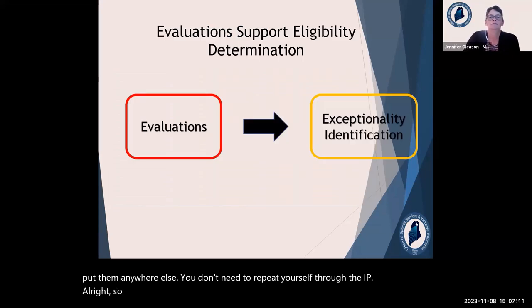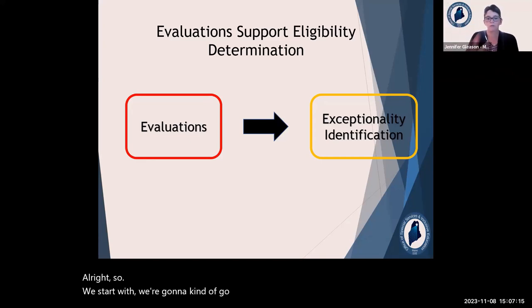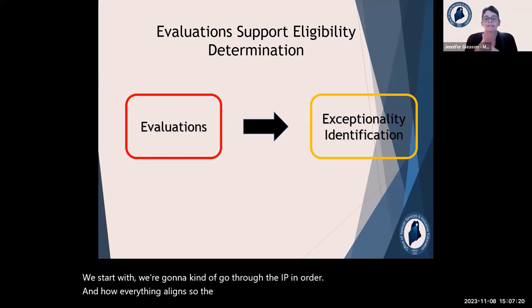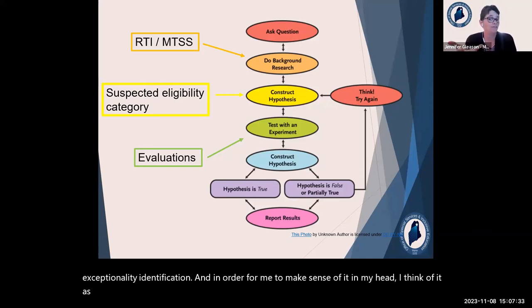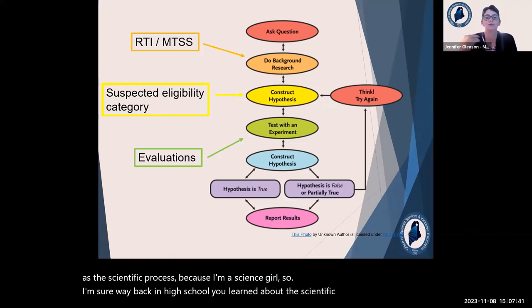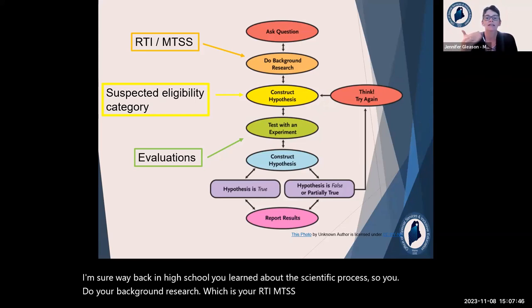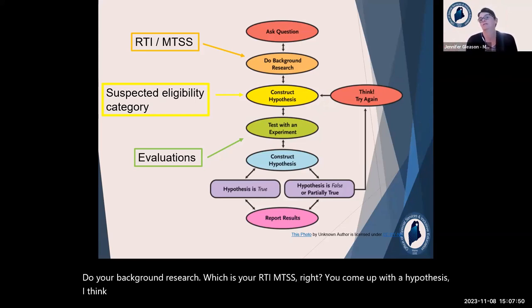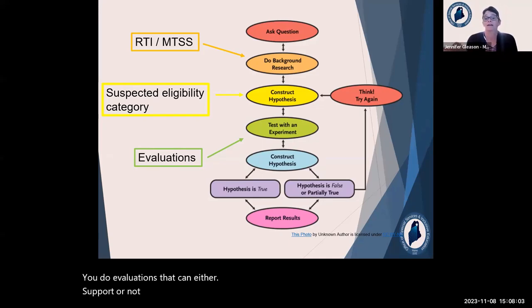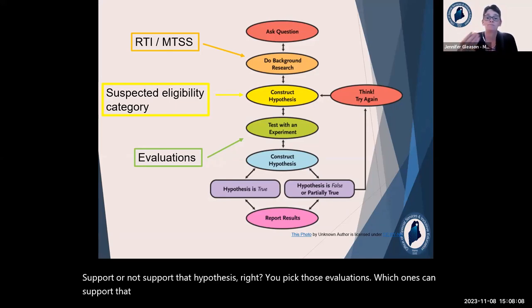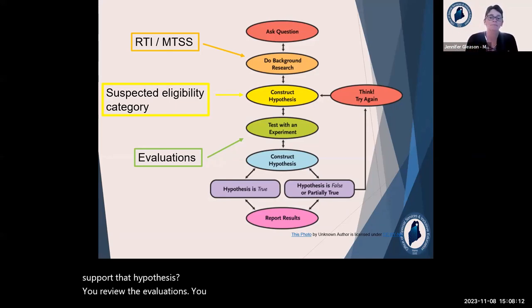We're going to go through the IEP in order and how everything aligns. The first thing is how evaluations align with the exceptionality identification. I think of it as the scientific process: you do your background research, which is your RTI/MTSS; you come up with a hypothesis — for example, 'I think this student might be eligible under OHI for ADHD'; you do evaluations that can either support or not support that hypothesis, choosing evaluations that can support it. Then you review the evaluations and say yes, the hypothesis is true, false, or partially true.